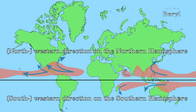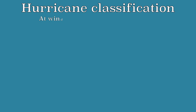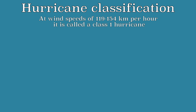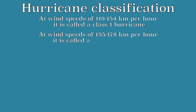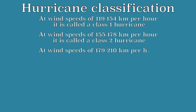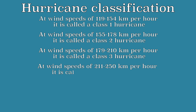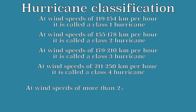To distinguish between the strength of hurricanes, a classification based on wind speed is used. At wind speeds of 119 to 154 km per hour, it is called a class 1 hurricane. At wind speeds of 155 to 178 km per hour, it is called a class 2 hurricane. At wind speeds of 179 to 210 km per hour, it is called a class 3 hurricane. At wind speeds of 211 to 250 km per hour, it is called a class 4 hurricane. At wind speeds of more than 250 km per hour, it is called a class 5 hurricane.